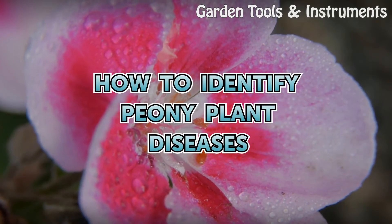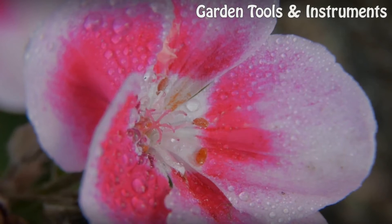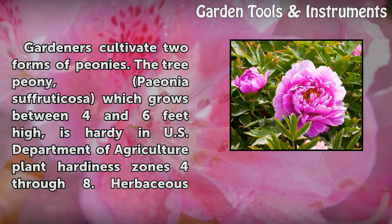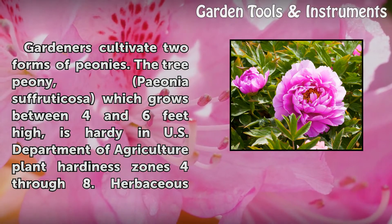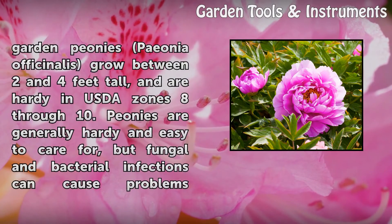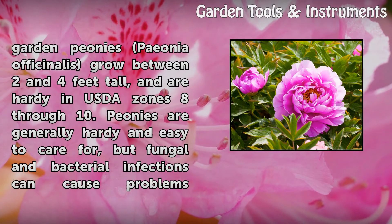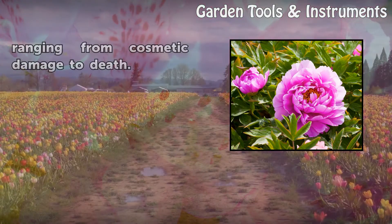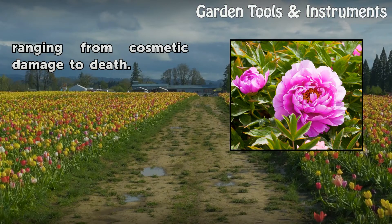How to Identify Peony Plant Diseases. Gardeners cultivate two forms of peonies: the tree peony, Paeonia suffruticosa, which grows between 4 and 6 feet high and is hardy in USDA plant hardiness zones 4 through 8, and herbaceous garden peonies, Paeonia officinalis, which grow between 2 and 4 feet tall and are hardy in USDA zones 8 through 10. Peonies are generally hardy and easy to care for, but fungal and bacterial infections can cause problems ranging from cosmetic damage to death.